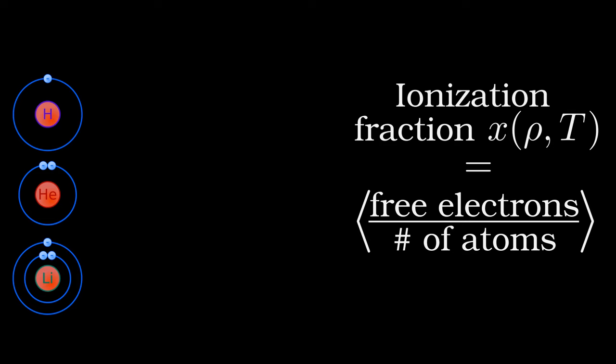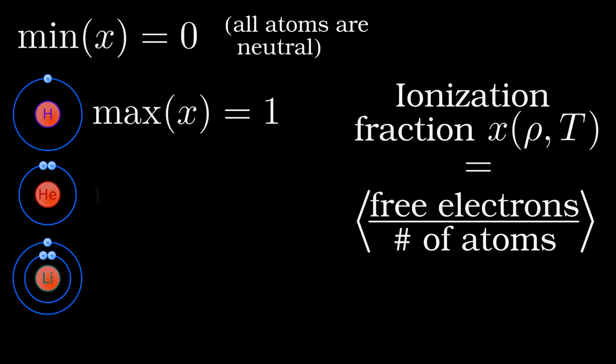It has a single unique solution. For the ionization fraction, the number of free electrons per atom, the strict lower bound is zero, the case where none of the atoms are ionized, and the upper bound is the total number of electrons in that atom. One for hydrogen, two for helium, three for lithium, and so on.